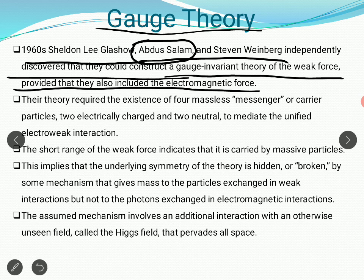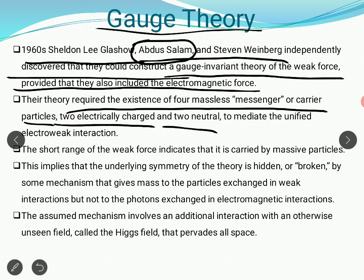This theory was formed on the basis of four massless messenger or carrier particles, out of which two are electrically charged and two are neutral, to mediate the unified electroweak interaction. So we consider particles like the photon, the W bosons, and the Z bosons — W plus and W minus bosons. These are the charged and neutral particles which mediate the electroweak interaction.